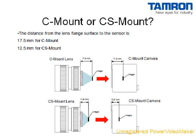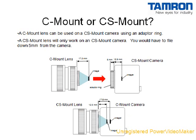Generally, a C-mount lens is used on a C-mount camera, and a CS-mount lens is used on a CS-mount camera. A C-mount lens can be used on a CS-mount camera using an adapter ring. The adapter ring serves to increase the distance between the lens and the camera so that the image produced by the lens is aligned with the imager. It is not possible to use a CS-mount lens with a C-mount camera. Dome cameras sometimes require a custom mount that is neither C nor CS-mount. If you are using a dome camera that requires a lens with a custom mount, contact your lens manufacturer for detailed information on the type of lens you will need.